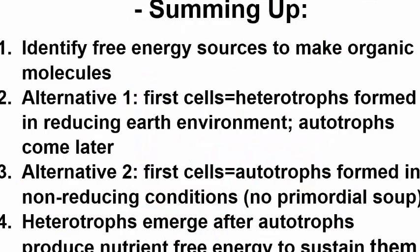Let's sum up. Speculation about life's origins begins by trying to identify a source of free energy with which to make organic molecules. The first cells could have been heterotrophs formed in a reducing Earth environment, from which autotrophs later evolved. Alternatively, the earliest cells could be autotrophs formed under non-reducing conditions in the absence of a primordial soup, and only after these autotrophs had produced enough nutrient-free energy to sustain them did heterotrophs belatedly emerge. And that brings us to the end of this presentation.